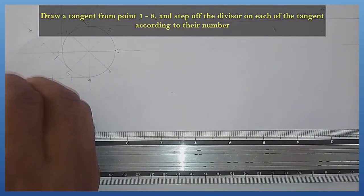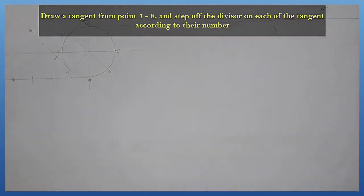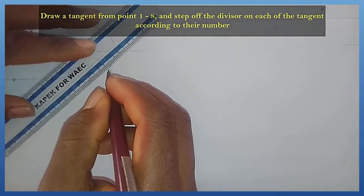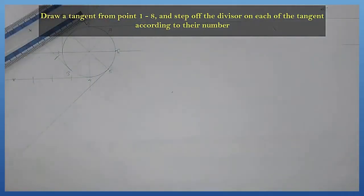This is the point on point number 4. For point number 5, I'm drawing the tangent on point number 5 here, and I'm stepping it off 5 times.